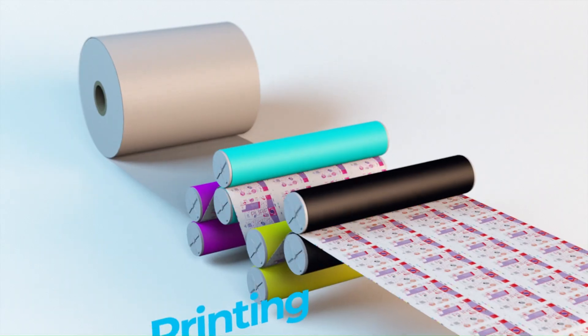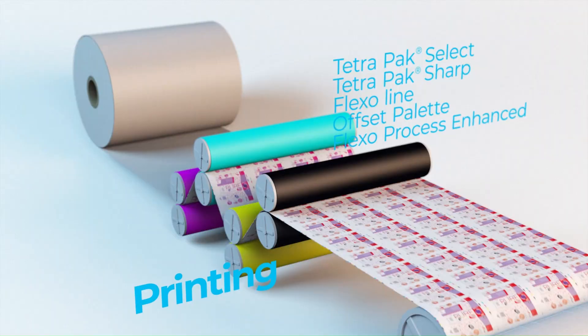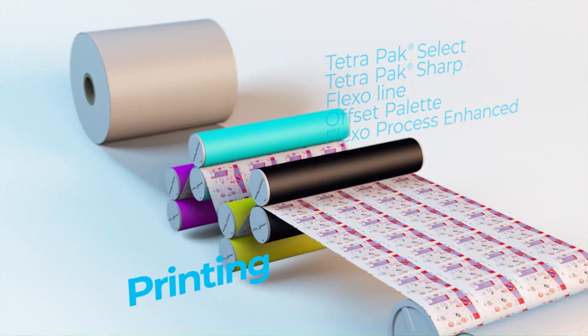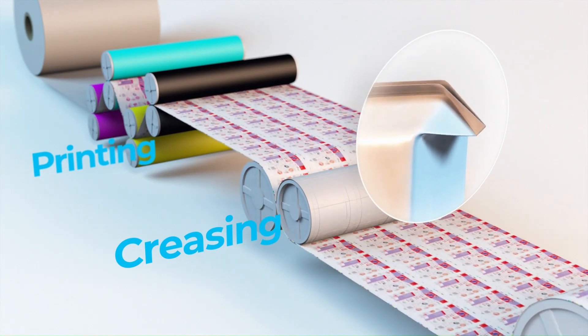First we print our customer's design on the paperboard using one of five different printing techniques. Then we score crease lines on it, making it possible to form perfectly shaped packages.